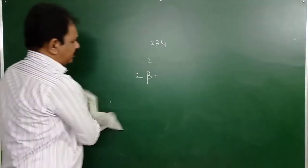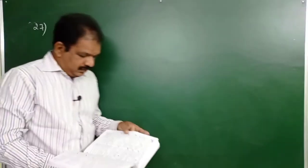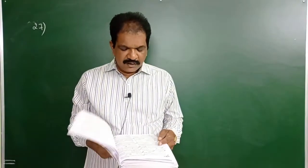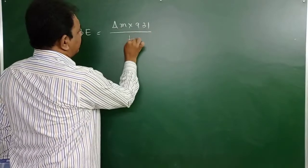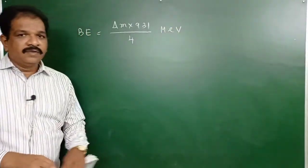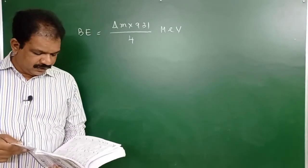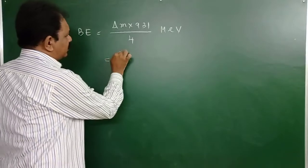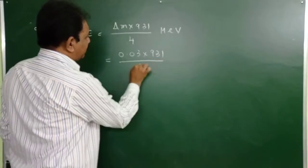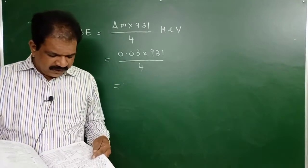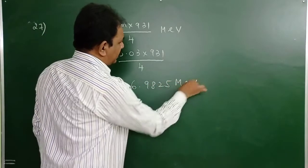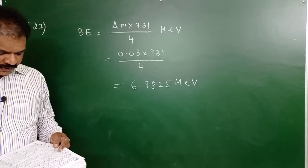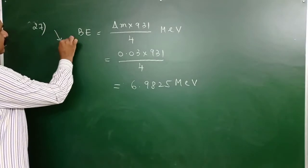Question 27: Given mass defect, find binding energy per nucleon. Formula: binding energy = Δm × 931 MeV, divided by mass number. For helium-4: ΔE per nucleon = 0.03 × 931 / 4 ≈ 6.9825 MeV per nucleon, which gives approximately 96.9825 MeV for the full nucleus. Wait, binding energy per nucleon = 0.03 × 931 / 4. Answer is 1st option.